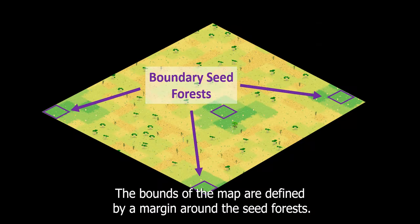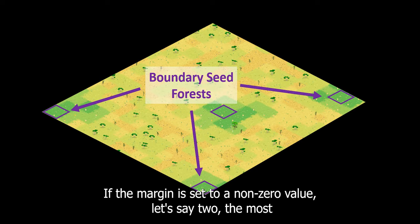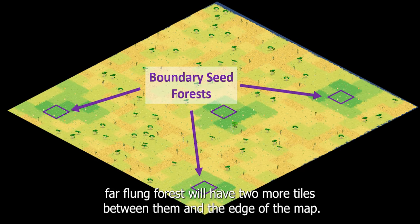The bounds of the map are defined by a margin around the seed forests. If the margin is set to 0, the most far flung forests will be on the edge of the map. If the margin is set to a non-zero value, let's say 2, the most far flung forests will have two more tiles between them and the edge of the map.